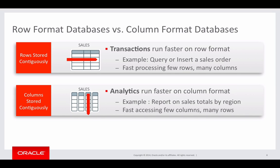With a row format database, for each new record that's added to the database, a new row is added to a table. That row is made up of multiple columns, each column representing a different attribute about that record. For example, if we add a new customer to our database, the new row in the table would have a column with the customer's name, another with their address, another with their email, and so on, as we recorded all of the attributes or pieces of information about that customer.